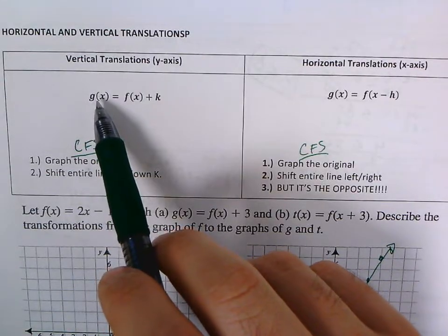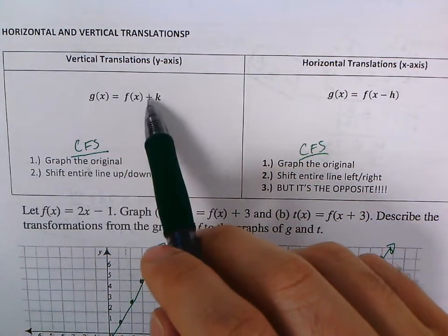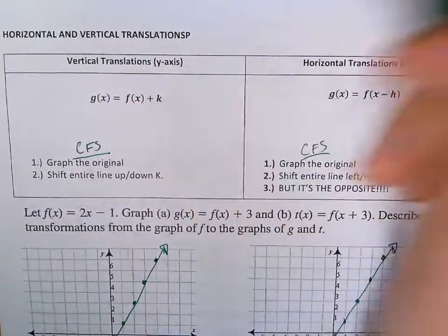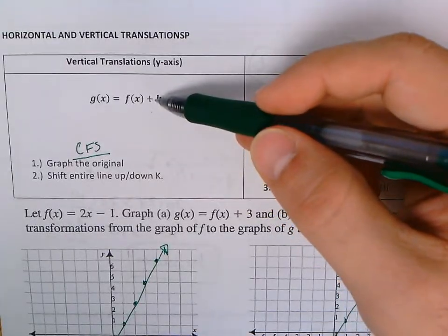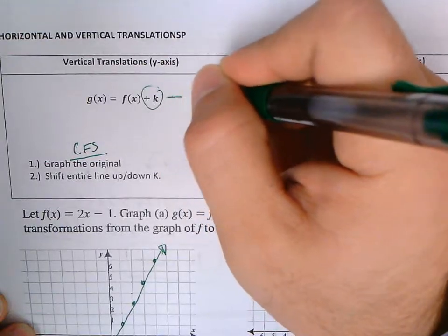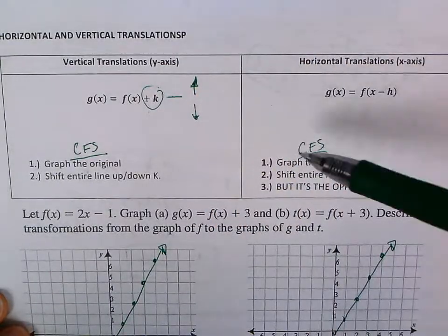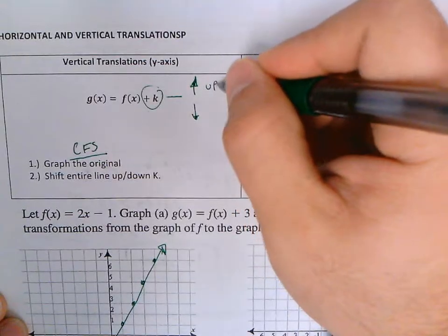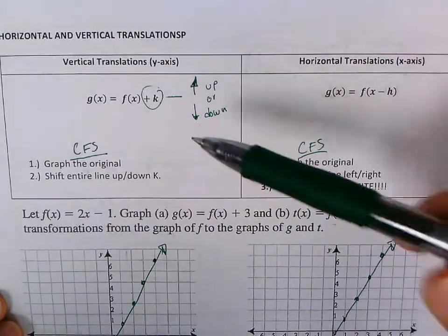If I have a function g of x, and g of x is a transformation of f of x, and in this case it is f of x plus k, then that means I will have a vertical translation. In simple words, if the number is outside the parentheses and it's adding or subtracting, that means my graph is going to go up or down k units.